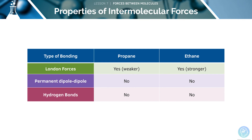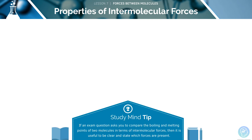For example, if we are comparing propane and ethane, neither has permanent dipole-dipole forces nor hydrogen bonding, but both have London forces. When answering exam questions, it's really important to remember to mention all three types of intermolecular force where relevant, not just London forces.